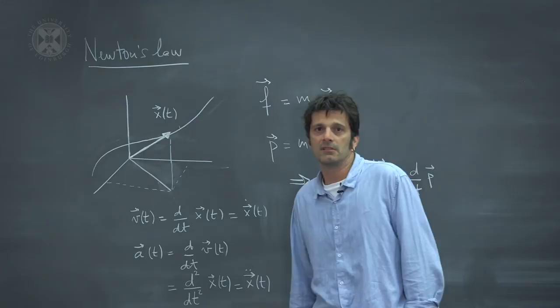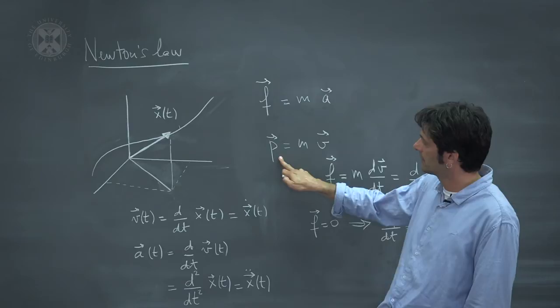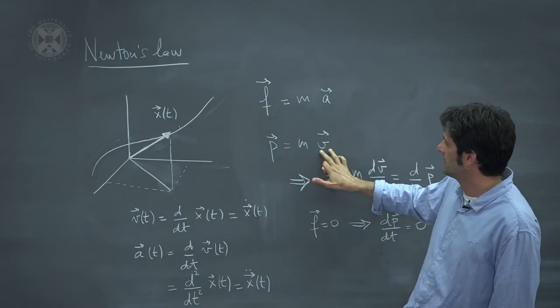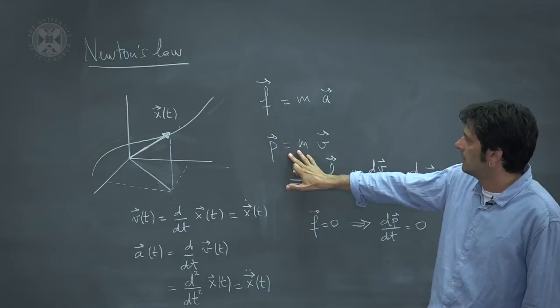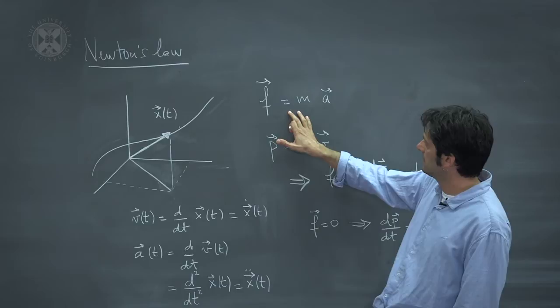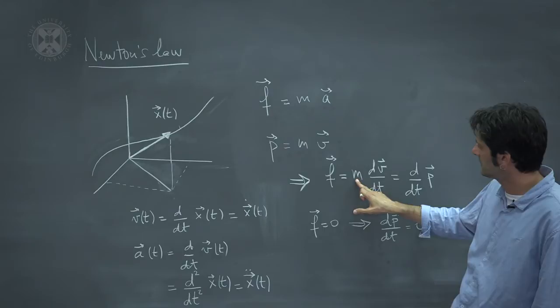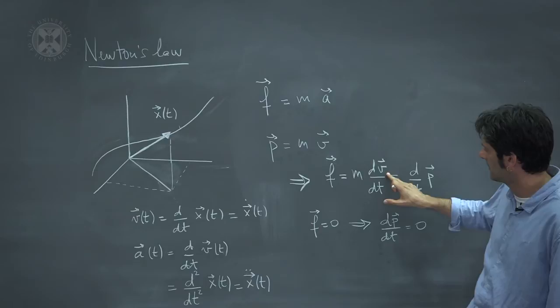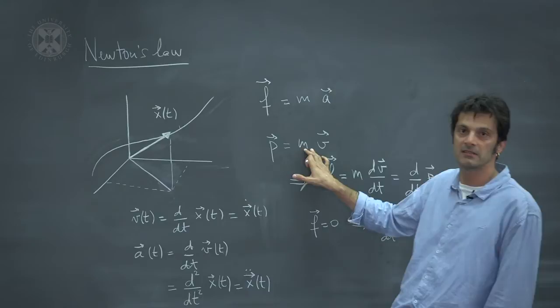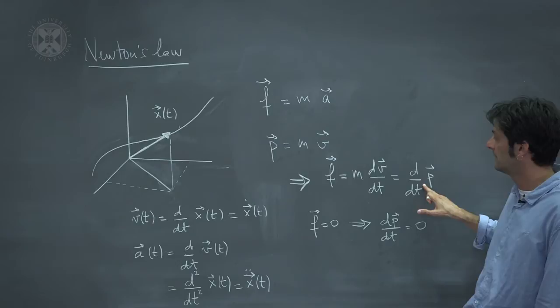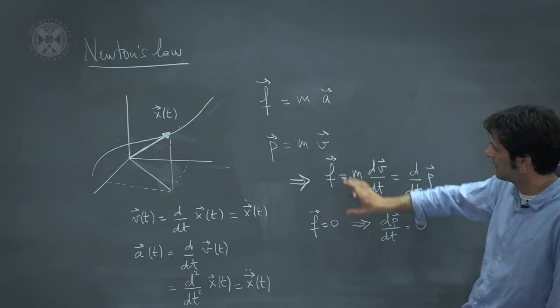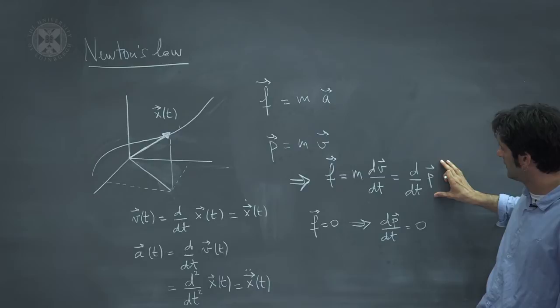We can now work out some simple consequences of Newton's law. First, let us introduce a new quantity called the momentum of our system, which is simply the product of the velocity times the mass. Using the momentum, we can rewrite Newton's law: substituting for A, the force equals mass times the first derivative of velocity with respect to time, which — assuming constant mass — is simply the first derivative of the momentum. So the total forces acting on the system gives you the rate at which the momentum is changing.